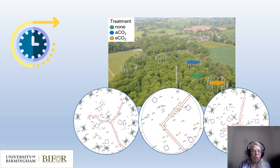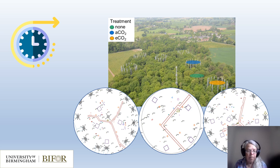Tree water usage depends both on species and on tree size — stem size and the area of ground overhung by the tree's canopy — and it's consistent across all treatments. Experimental infrastructure changes the water demand of the trees, probably due to changes in microclimate and air flow. We've also confirmed that environmental factors other than CO2 influence water usage on all these oaks.